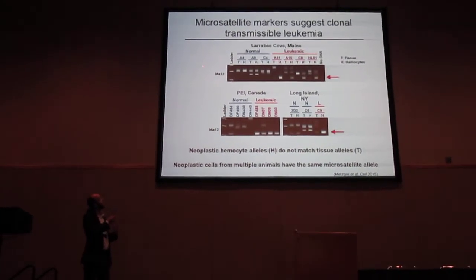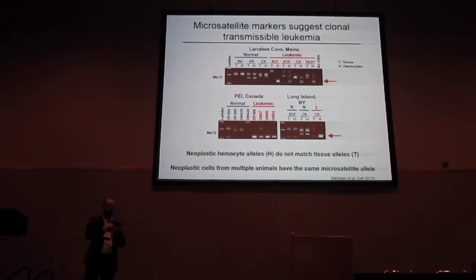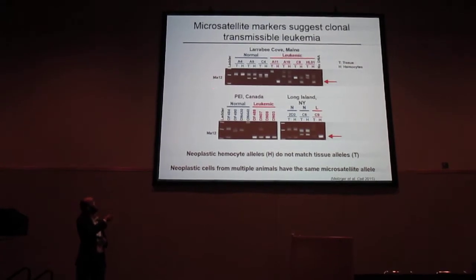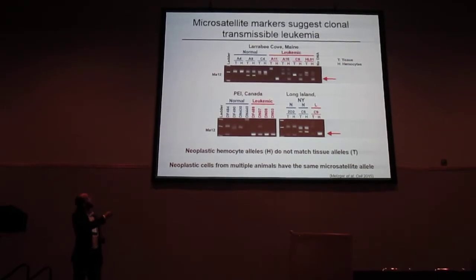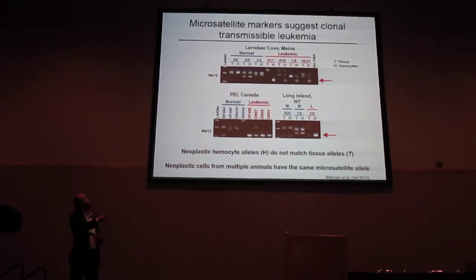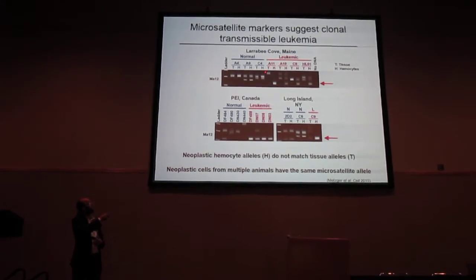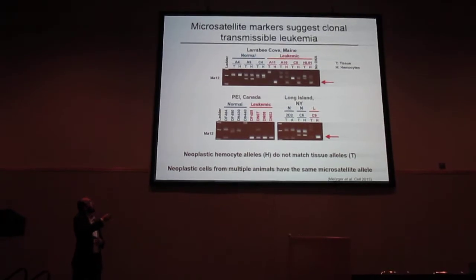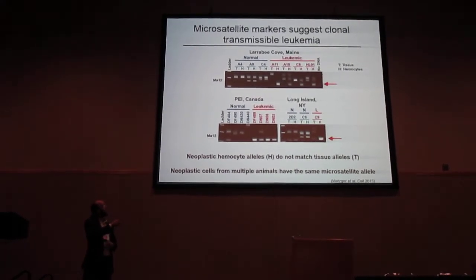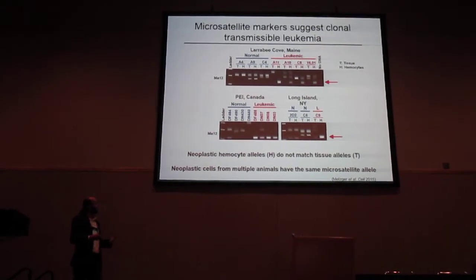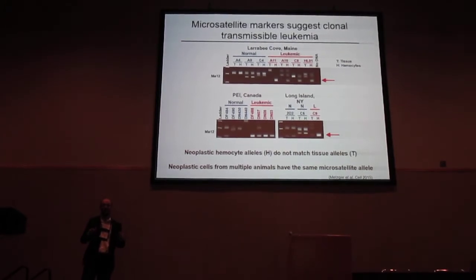We used microsatellite alleles to look at differences between the solid tissues and the hemocyte genotypes. In normal animals — showing one representative microsatellite allele — we see one band in homozygotes and two bands in heterozygotes, as expected. Within a single individual, the solid tissue genotype and hemocyte genotype match. But in leukemic animals, the solid tissue genotype and the hemocyte genotype were completely different in every single case — in samples from Maine, Canada, and Long Island. Notably, we see the same neoplasm-associated allele in all these samples, suggesting there's the same clonal genotype of that cancer cell, distinct from each host.